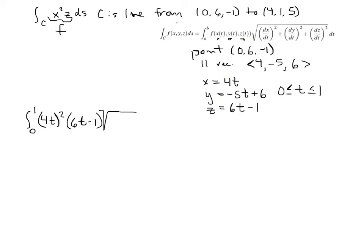Times square root of the partial of x with respect to t. So that's going to be 4. And I'm going to square that. Plus the partial of y with respect to t. Here's y. I'm going to take its derivative, which is negative 5. And I'm going to square that. Plus partial z with respect to t. So that would be a 6. And I'm going to square that.